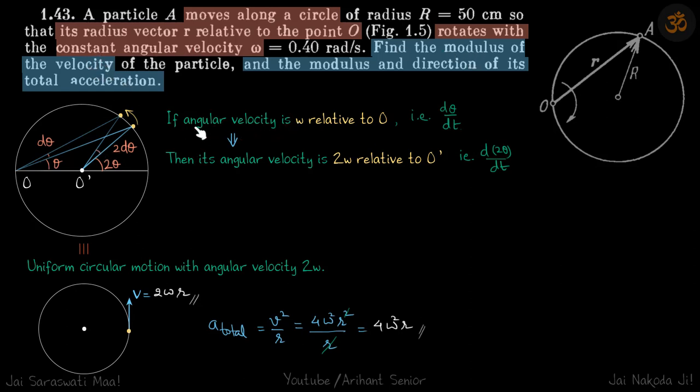What I explained I have written also. If angular velocity is omega relative to O, that is d*theta/dt, then its angular velocity is 2*omega relative to O', that is d*2*theta/dt by simple geometry. Which means it's a uniform circular motion with angular velocity 2*omega.